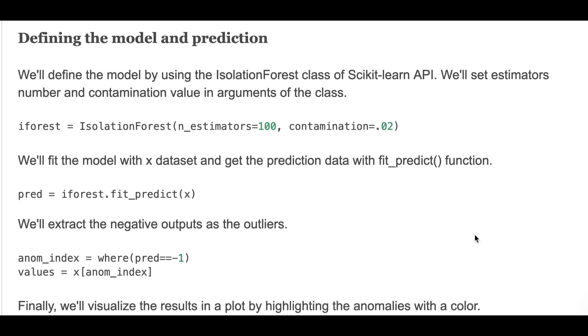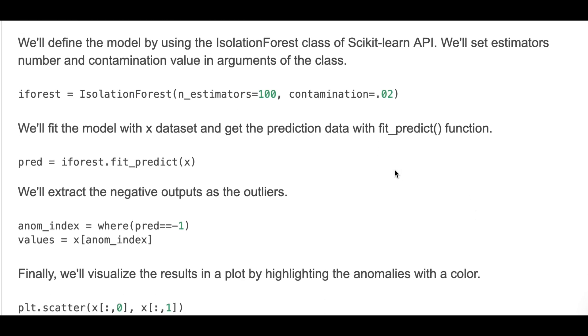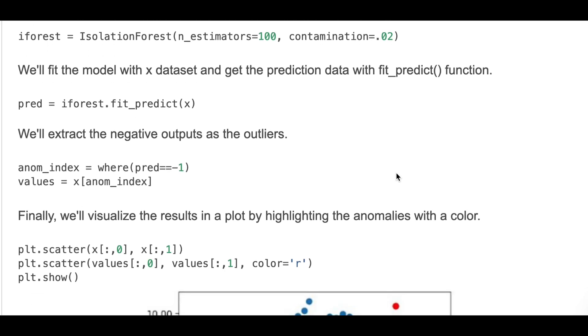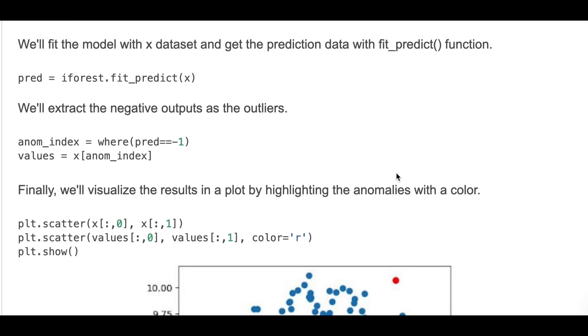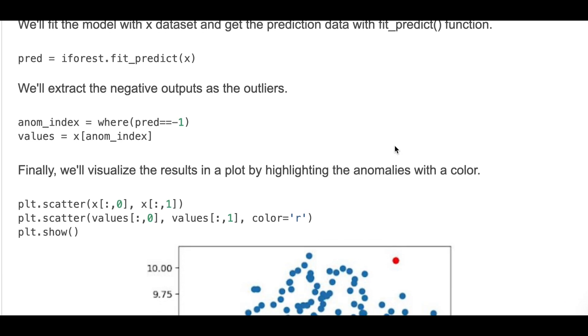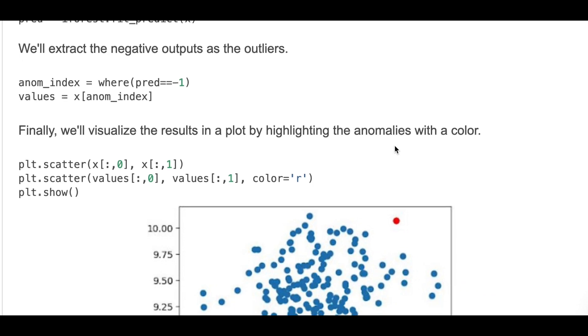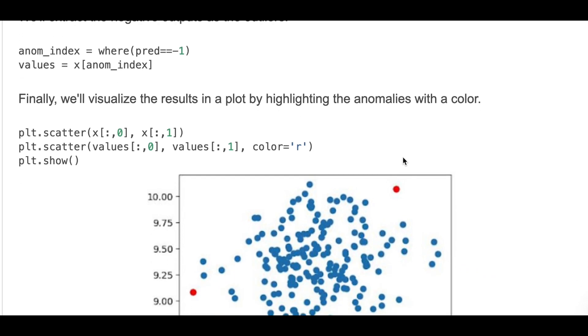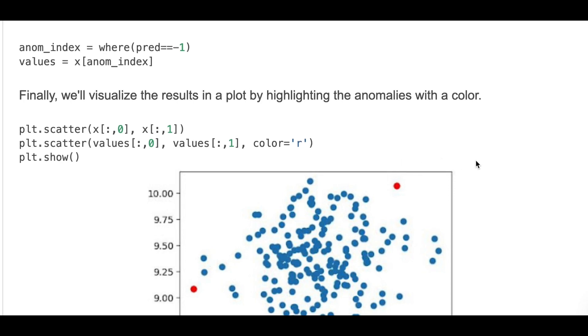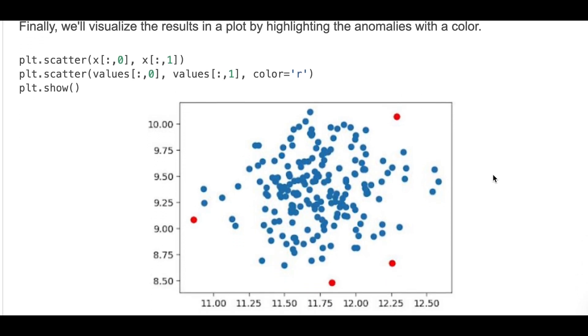We'll fit the model on the X dataset and get prediction with the fit_predict function. Then we'll extract the negative outputs as outliers and we'll get their values. Finally, we visualize results in a plot by highlighting the anomalies with a color. Here we found four anomalies in this data.